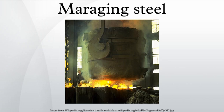Maraging steel production, import, and export by certain states, such as the United States, is closely monitored by international authorities because it is particularly suited for use in gas centrifuges for uranium enrichment. Lack of maraging steel significantly hampers this process. Older centrifuges used aluminum tubes; modern ones use carbon fiber composite.